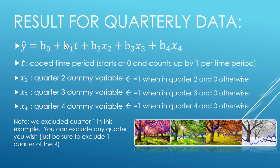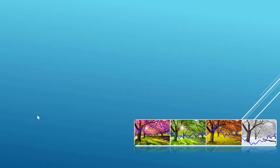Now what if we had monthly data? As a reminder, quarter one has been excluded. Again, you could exclude any one of the four dummy variables, you just have to make sure one of them is excluded. For monthly data we're going to do the same thing, but now we have 12 months, so this equation keeps going from b0 through b12.